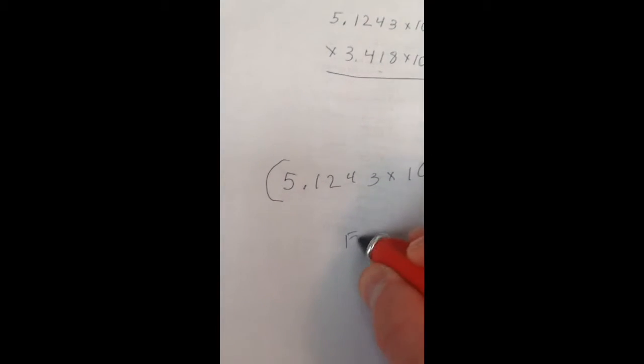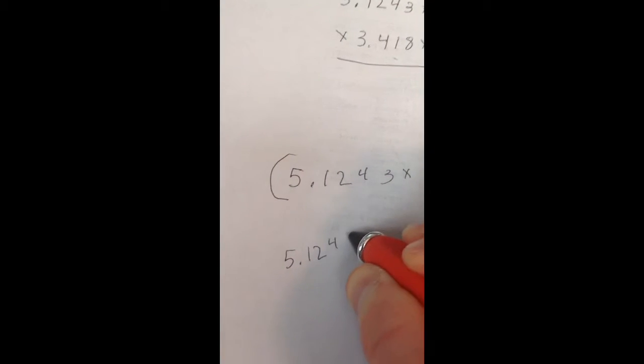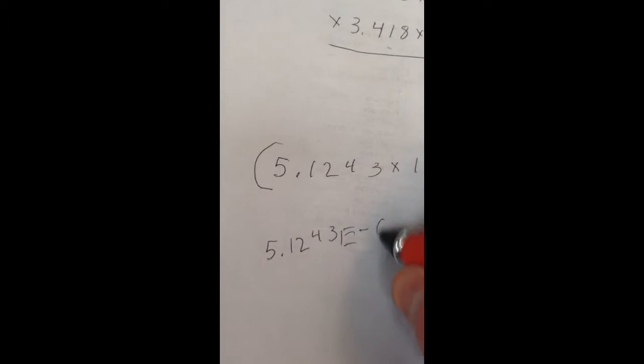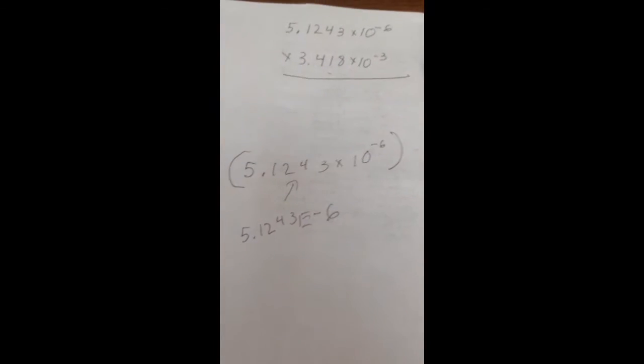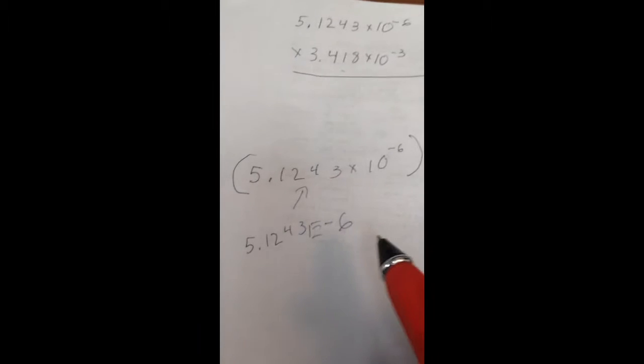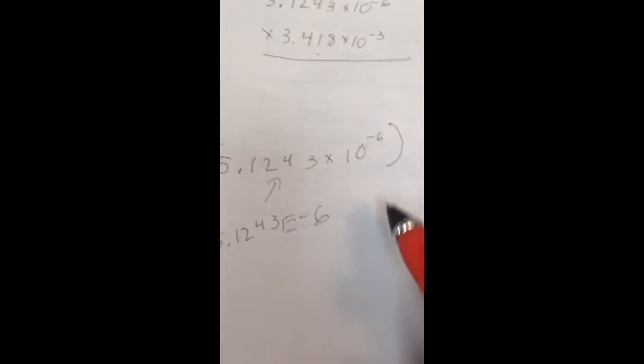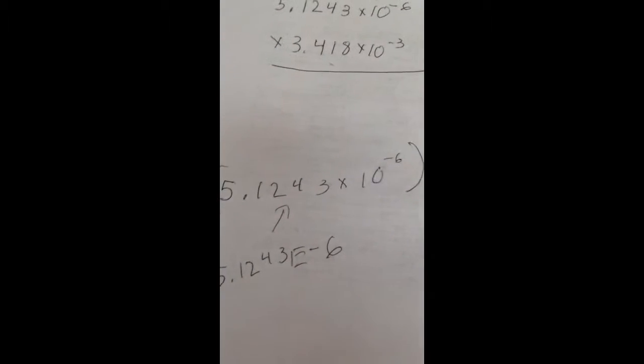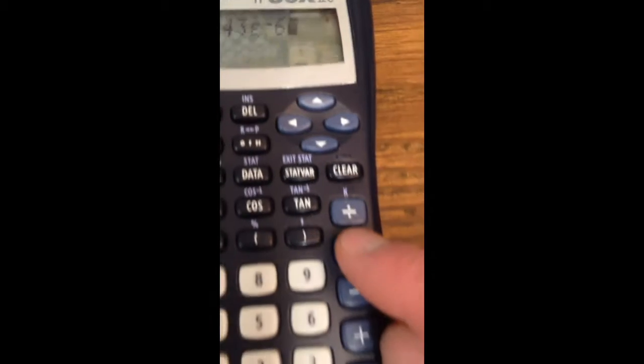Your calculator screen shows, but what it actually reads or views in its computer brain is that number right there. So it's real important that you use that EE button because it will drop parentheses and save you from making mistakes. Notice I didn't put the power of 10 in or 10 anywhere in. I just put 5.1243 EE. All right, so now I'm wanting to multiply, so I'm going to hit times.